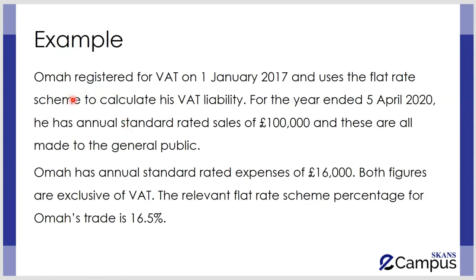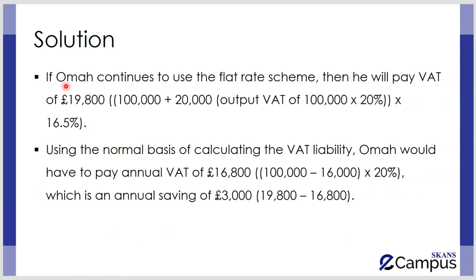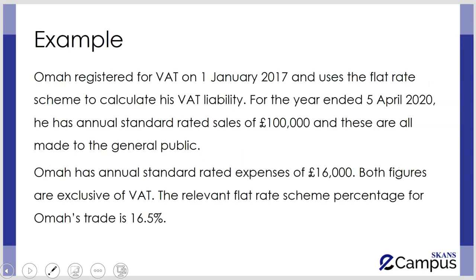Let's take an example. OMA registered for VAT on 1st January 2017 and uses the Flat Rate Scheme to calculate his VAT liability. For the year ended 5th April 2020, he has annual standard rated sales of £100,000 — all made to the general public — and annual standard rated expenses of £16,000. Both figures are exclusive of VAT. The relevant flat rate scheme percentage for OMA's trade is 16.5%.